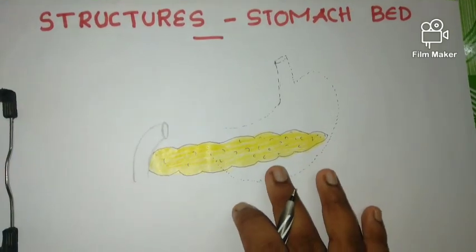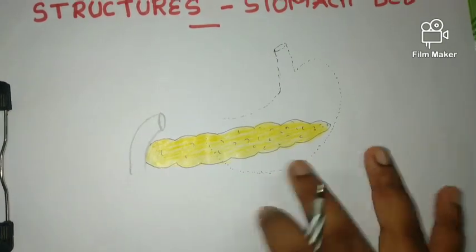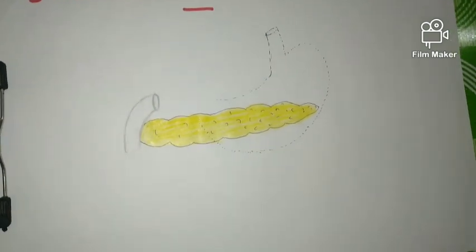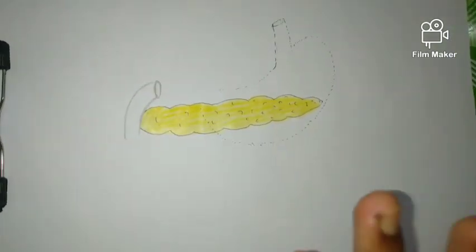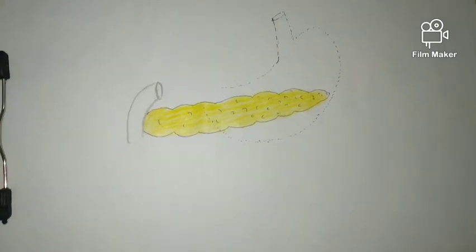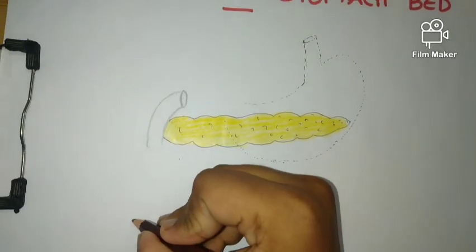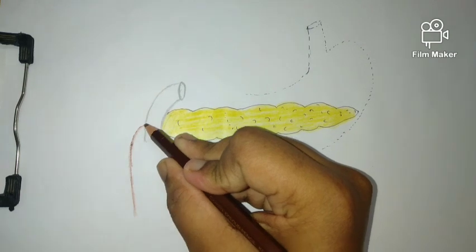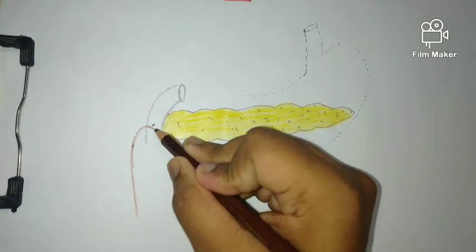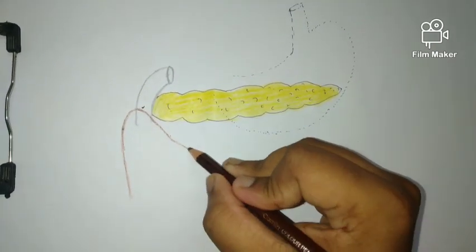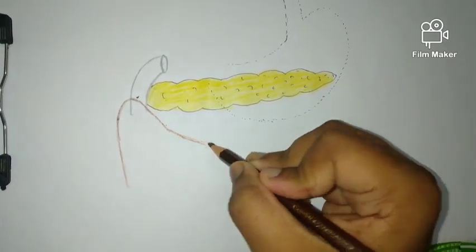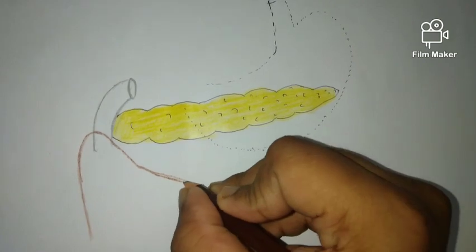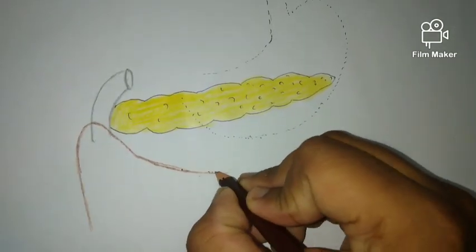After that we have to draw the transverse colon of the large intestine. That forms one of the structures on the posterior inferior surface — it is one of the relations of the stomach, present on the posterior inferior surface. The transverse colon of the large intestine is arranged in a U-shaped manner.